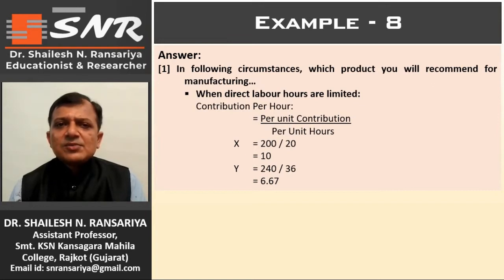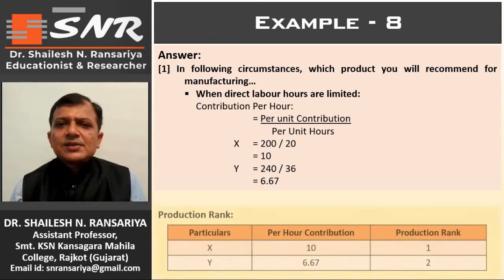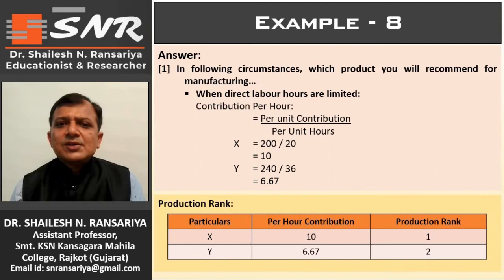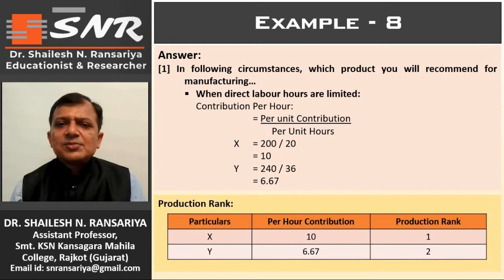So now the production rank when labor is the key factor. Here also Product X has higher contribution per hour than Product Y. So first rank is given to Product X and second rank to Product Y. The company will produce Product X first, then Product Y.